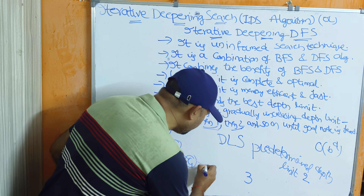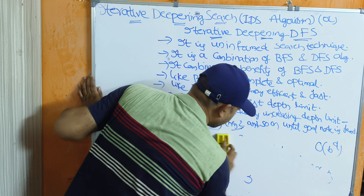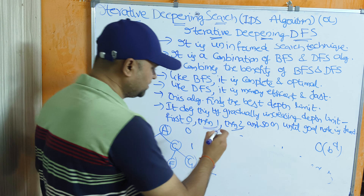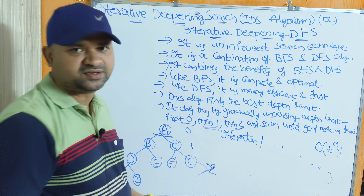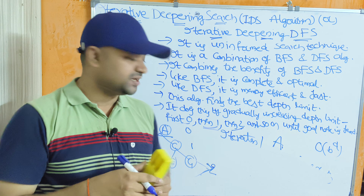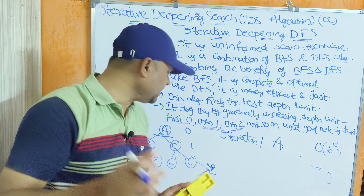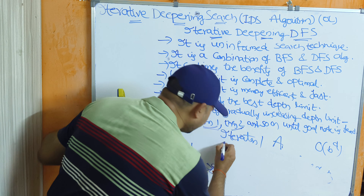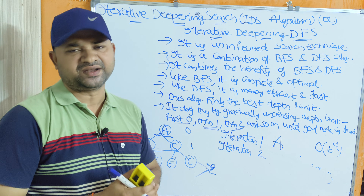Let us assume G is the goal node. At level zero we have node A; level one has the next nodes; level two has the deeper nodes. In iteration one, only depth zero is considered, so only A is traversed. Since A is not the goal node, the depth is increased to one. In iteration two, DFS is performed up to depth one: A is traversed, then B, and then backtracking to C. The output is A, B, C, but the goal node G is still not found.